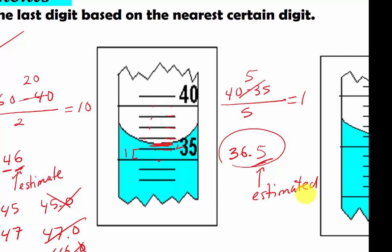You see the difference between decimal and without decimal. We always end our reading with an estimated digit.